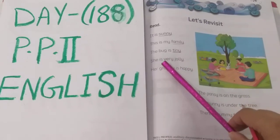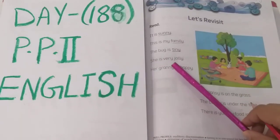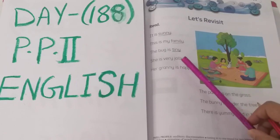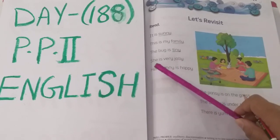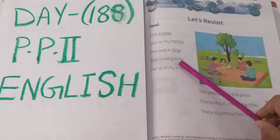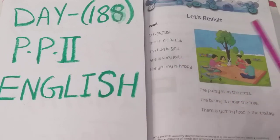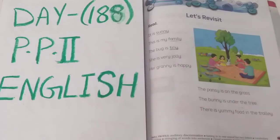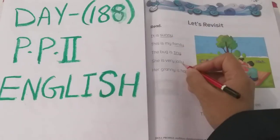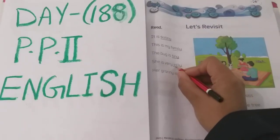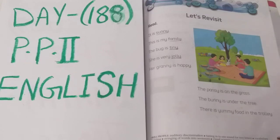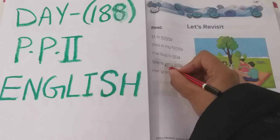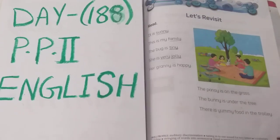Next: S-H-E, she. I-S, is. V-E-R-Y, very. J-O-L-L-Y, jolly. She is very jolly. So where is the letter Y word for which we are pronouncing as E sound? Jolly. And also very. Okay children, next.